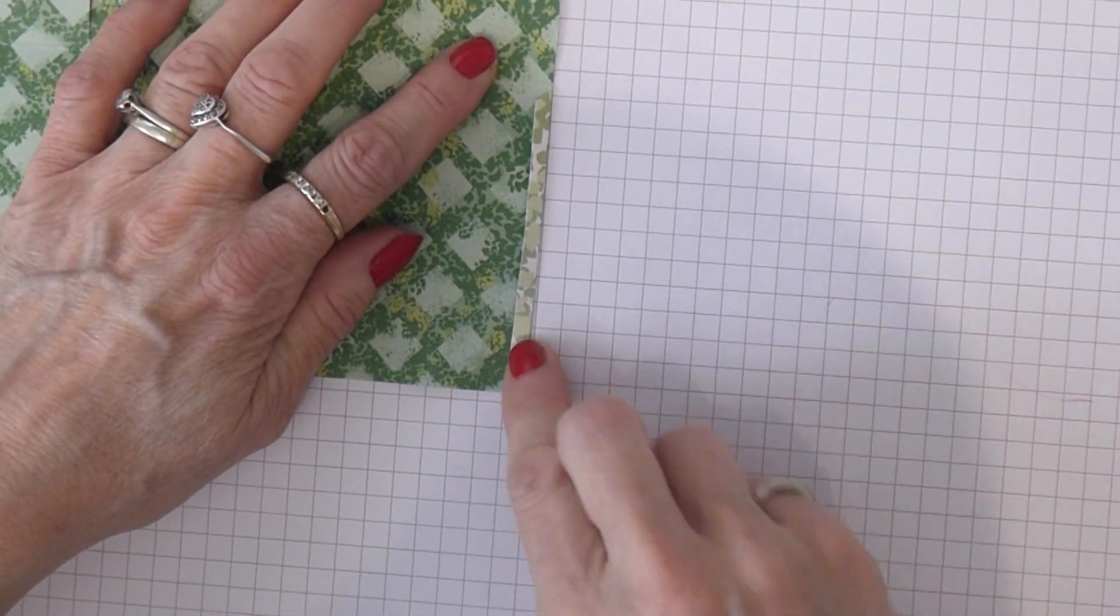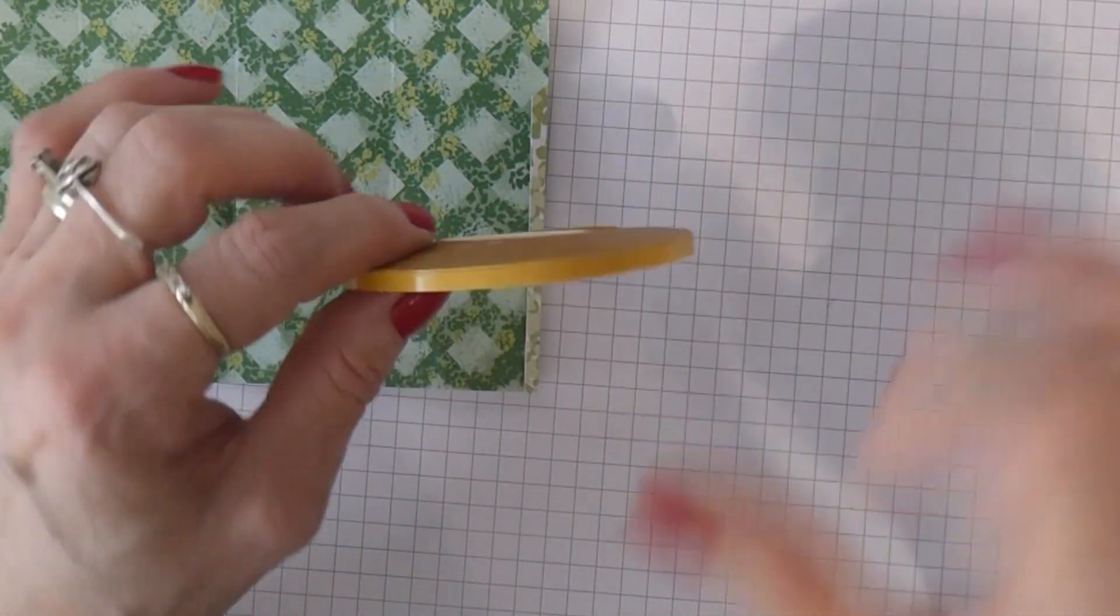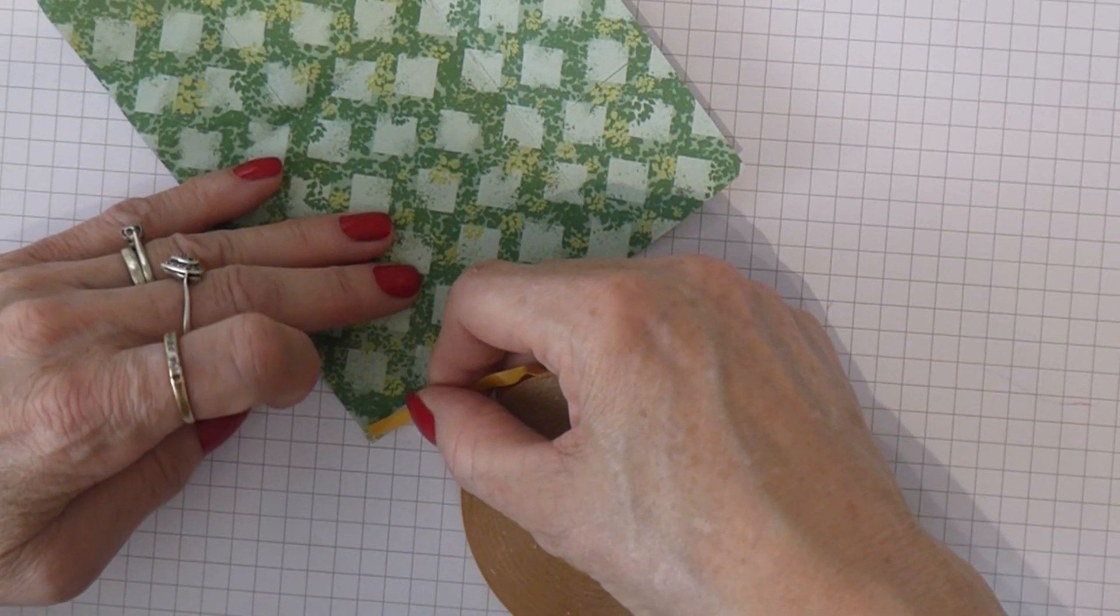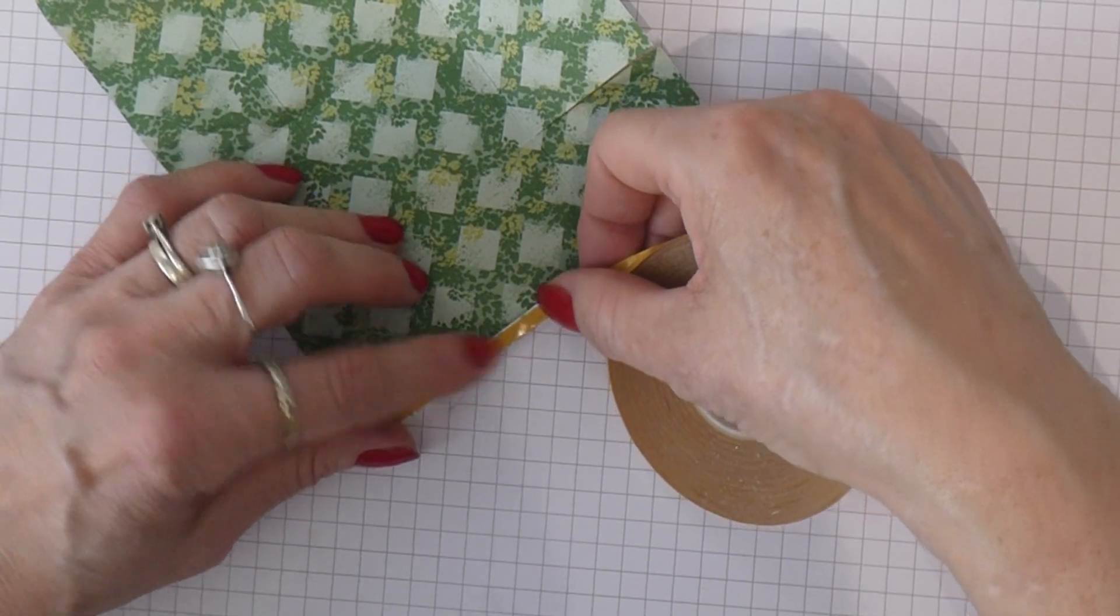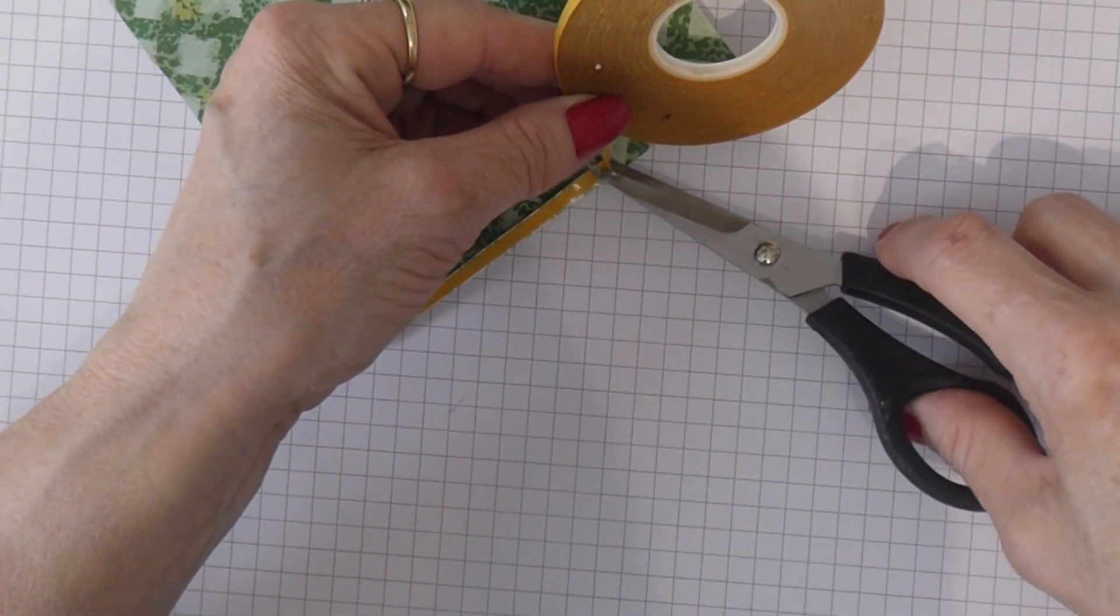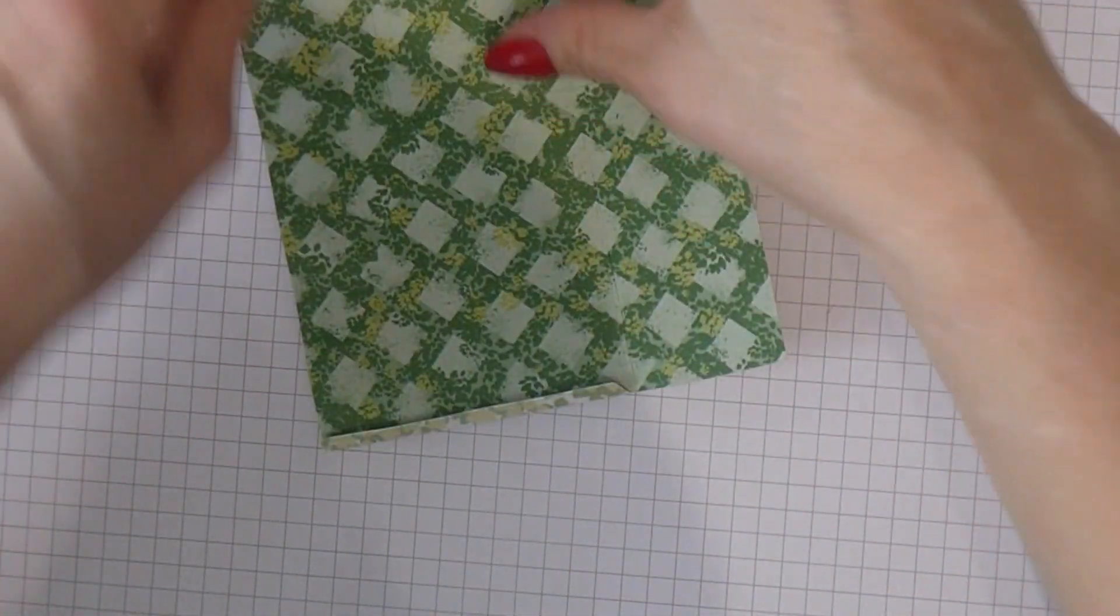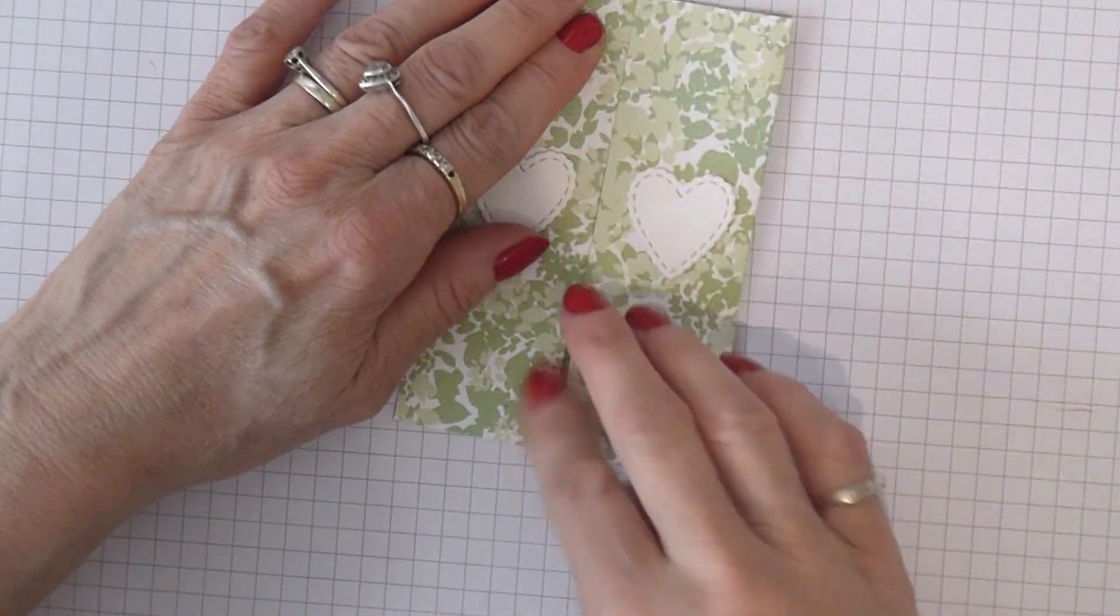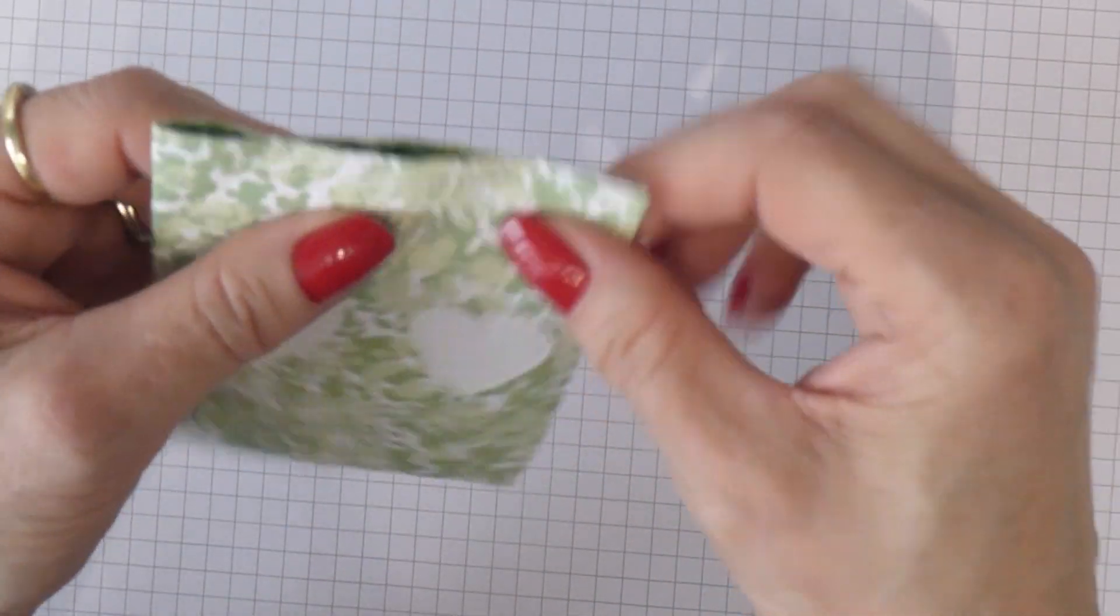And don't forget this little skinny guy here. Now you just want a very narrow piece of double sided tape to go down this little margin here. So I'm using Stick It's Too and this measures three millimeters wide.